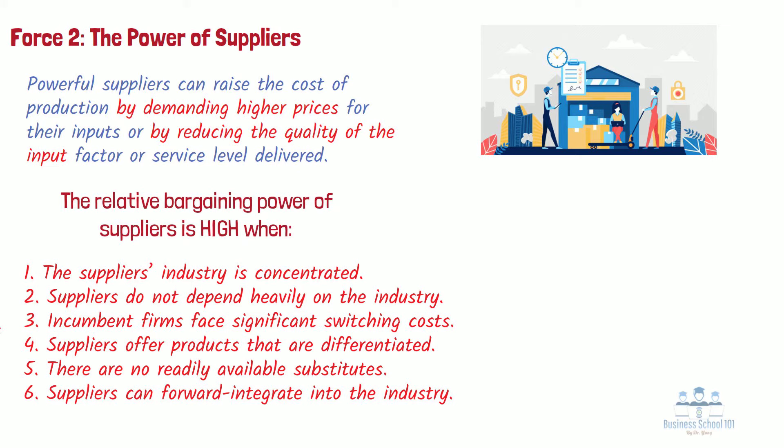Let's take a closer look at one important supplier group to the airline industry: Boeing and Airbus, the makers of large commercial jets. The reason airframe manufacturers are powerful suppliers to airlines is because their industry is much more concentrated than the industry it sells to.